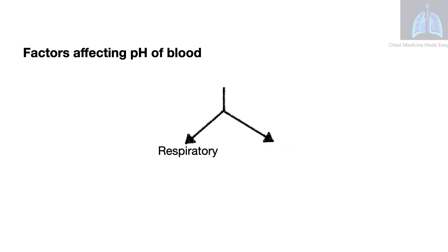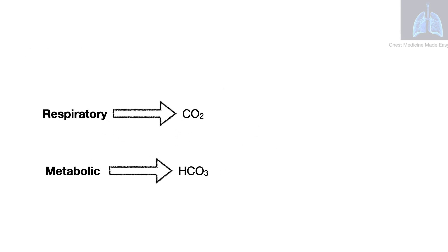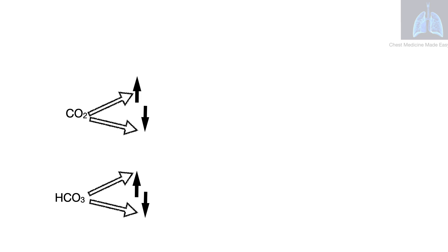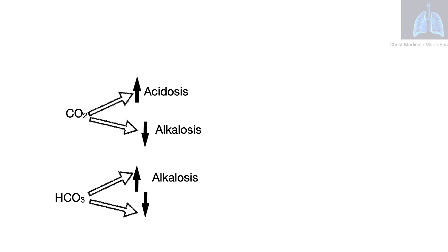Let us review the factors again. There are respiratory factors and there is a metabolic factor. The respiratory factor is carbon dioxide and the metabolic factor is bicarbonate. As the carbon dioxide increases, that is called a respiratory acidosis, and when the carbon dioxide level falls, it is called a respiratory alkalosis. When the bicarbonate level increases, it is a metabolic alkalosis, and when the bicarbonate level falls, it is a metabolic acidosis.